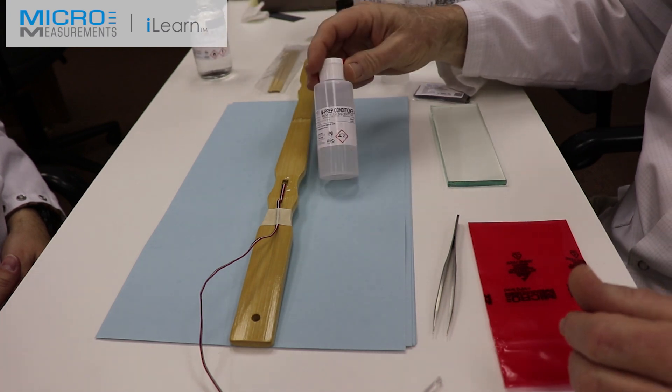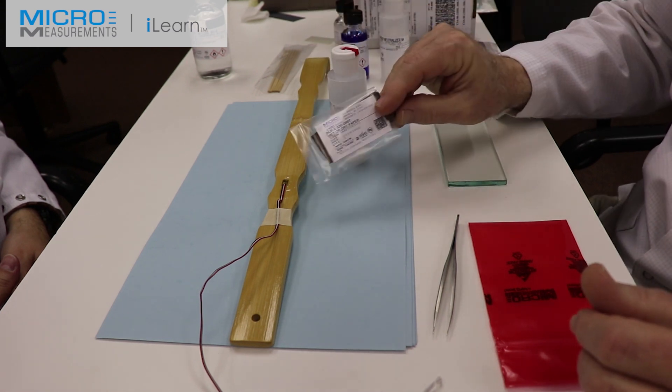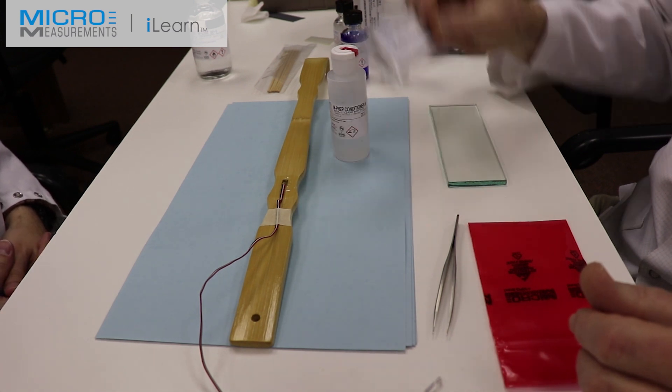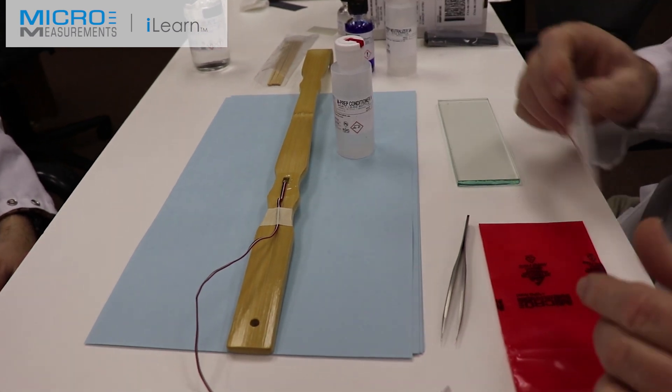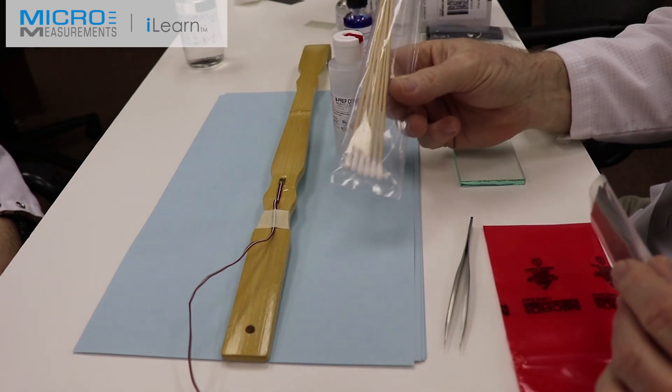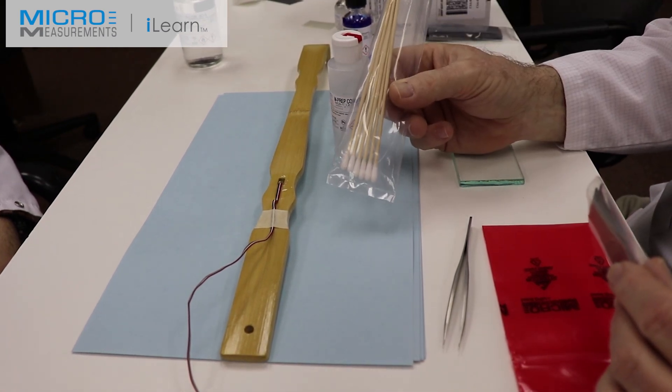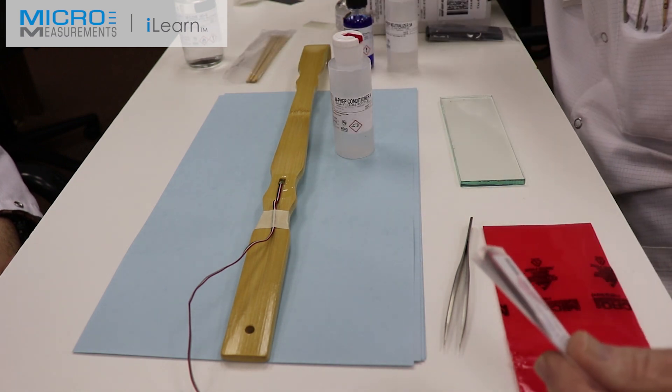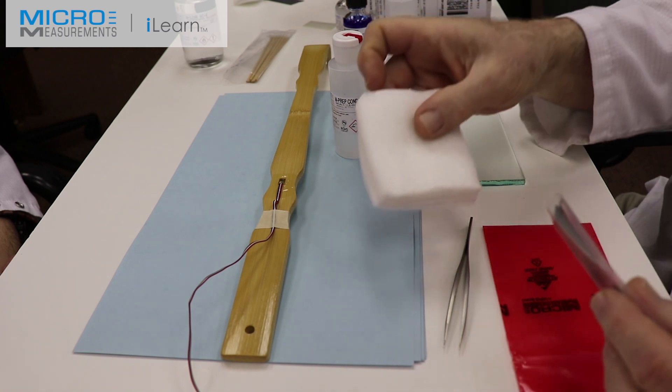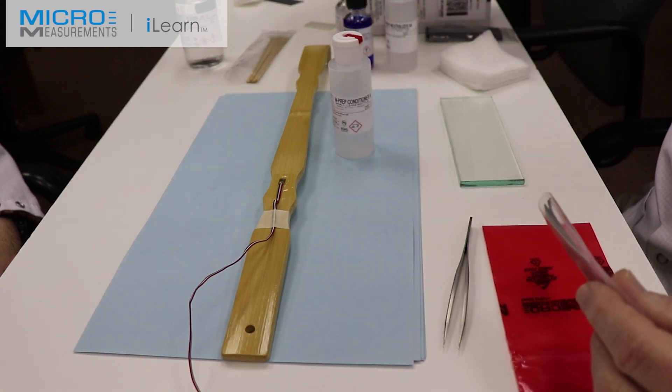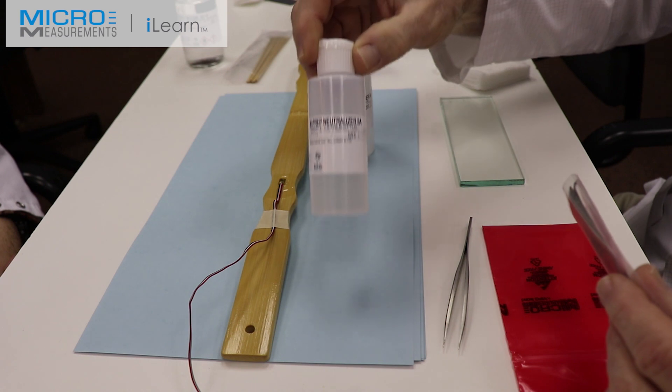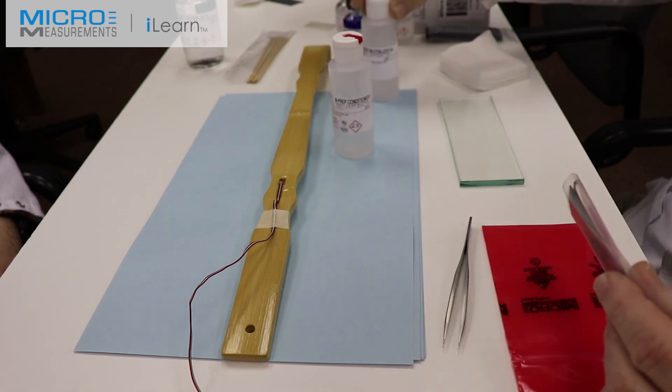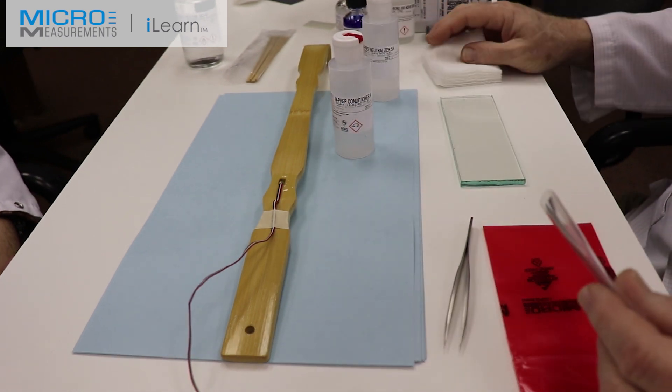We used the Conditioner A and the SCP-2, the silicon carbide abrasive paper. We used it to dry-abrade, then wet-abraded with Conditioner A, and then scrubbed using the cotton tip applicators, CSP-1. We scrubbed with Conditioner A and wiped it dry with gauze sponges, the GSP-1. Then we scrubbed with Neutralizer-5A to get the surface proper pH for bonding, and used gauze sponges to dry the surface.